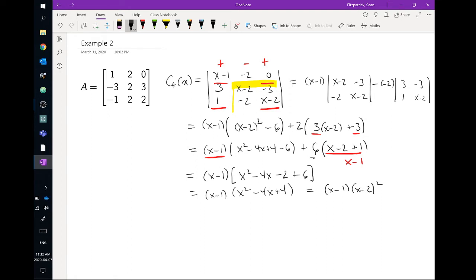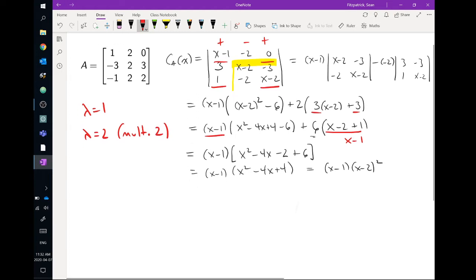So once again, we have that repeated eigenvalue. We have two eigenvalues. So we have lambda is equal to 1, and we have lambda is equal to 2, and this one has a multiplicity of 2.